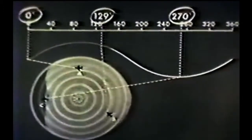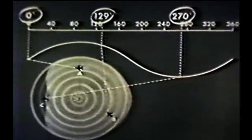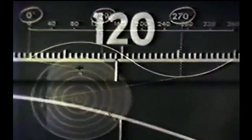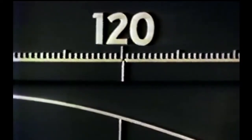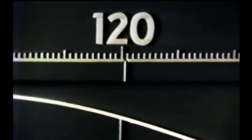When one cycle of modulation represents an entire 360 degrees of azimuth, the slope of the amplitude modulation makes it impossible to read bearings accurately. So, bearings from single cycle modulations are generally accurate only within plus or minus two degrees.